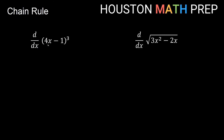So we have the derivative with respect to x of the quantity 4x minus 1, all cubed. We have something being cubed — that's one idea — and we have the function 4x minus 1. So this 4x minus 1 is inside of the idea of cubing something. We'll go ahead and work on our outside idea, which is the cube, and then the inside, 4x minus 1 — two separate things. Let's work on the outside first.